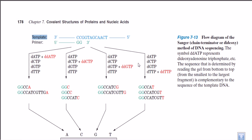Using these dideoxy sequences to terminate chains starting from one end, after the elongation reactions in all four test tubes we obtain a mixture of different fragment lengths of nucleotide sequences. In the first test tube, the sequence terminates wherever adenosine is incorporated; in the second, wherever CTP is incorporated, and so on. After all these reactions, we get fragments of various lengths corresponding to every position where that specific nucleotide occurs.